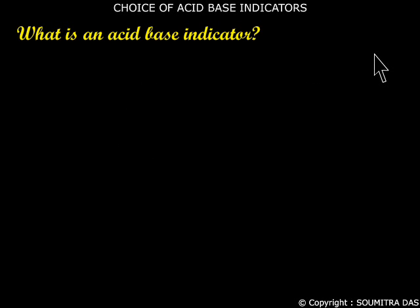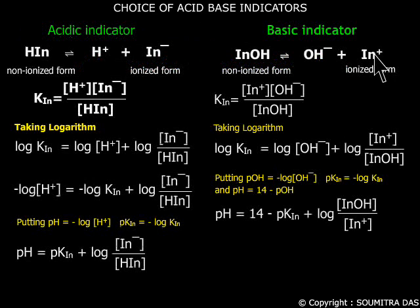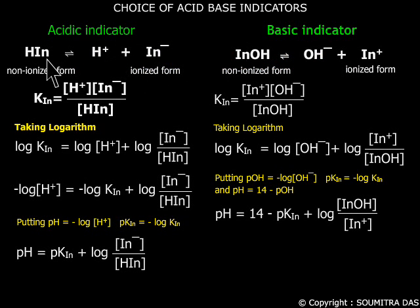What is an acid-base indicator? It is actually a weak aqueous acid or a base. That means it ionizes in aqueous medium like this. The ionized form and the non-ionized form of the indicator have two distinct colors. Here this part is constant.